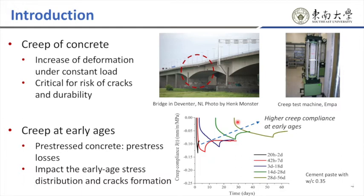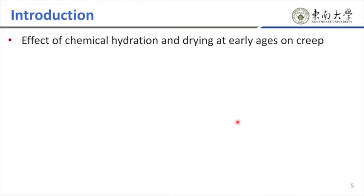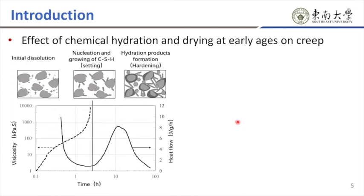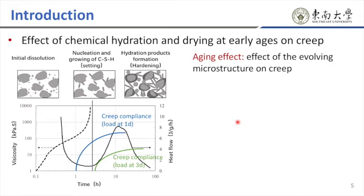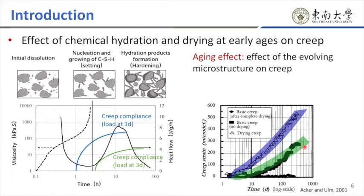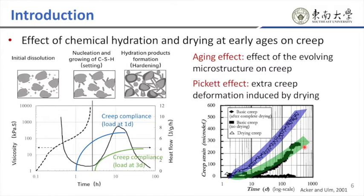However, to accomplish that, two major difficulties we have to face with. Firstly, at early age, cement hydration is at the same time scale as the creep evolution. Along with the undergoing hydration, complex microstructure is forming and changing with the degree of hydration. The creep of hydrating concrete depends on the loading time and also the evolving microstructure — the so-called aging effect. When there is drying, much higher creep is also seen compared to the basic creep for sealed specimens. We often call this actual deformation induced by drying the Pickett effect. Note that drying creep is beyond the scope of this study; we only focus on aging-based creep.